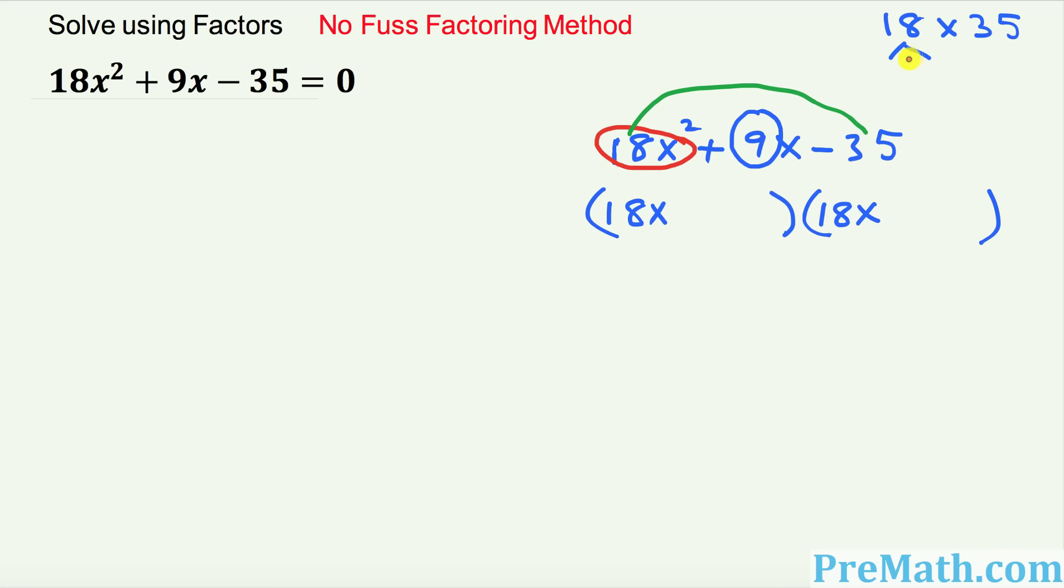I want you to just manipulate these numbers like this. 18 could be factored out to what? 3 times what? 6. And 35 could be factored out to what? 5 times 7, isn't it? Now what is the next thing I want you to do is multiply 5 times 6 which is what? 30. And 3 times 7 is going to give you what? 21.